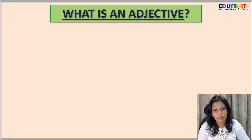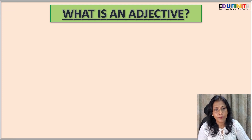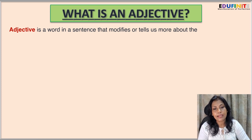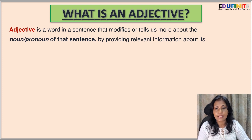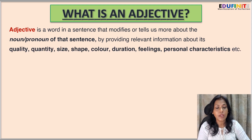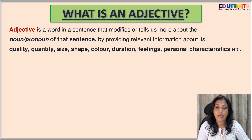Now let's delve into that. What is an adjective? An adjective is a word in a sentence that modifies or tells us more about the noun or pronoun of that sentence by providing relevant information about its quality, quantity, size, shape, color, duration, feelings, personal characteristics, etc.